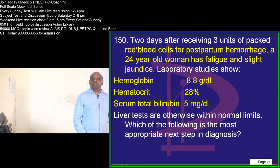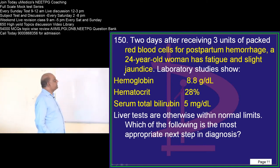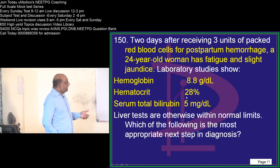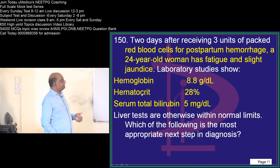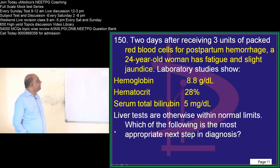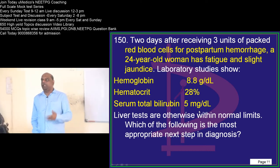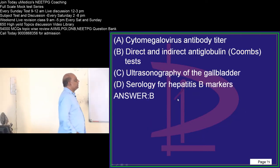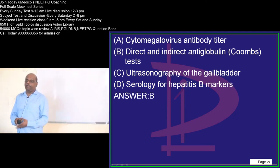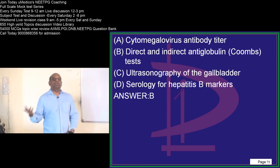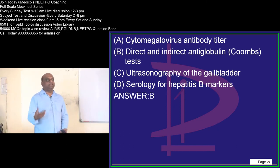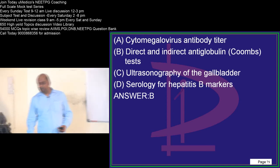Two days after receiving three units of packed red blood cells for a postpartum hemorrhage, a 24-year-old woman has fatigue and slight jaundice. Hemoglobin is 8.8, serum bilirubin is 5, and liver tests are otherwise normal. The next important step in the management of hemolytic anemia is to determine whether it is autoimmune or not — that is why you need to do direct and indirect anti-globulin tests as the first step in evaluating hemolysis that has started postpartum.